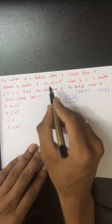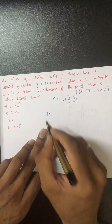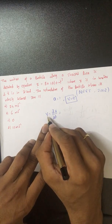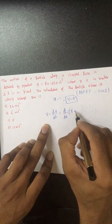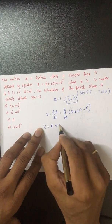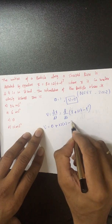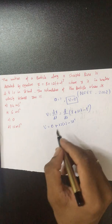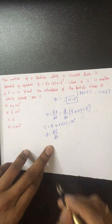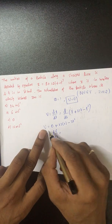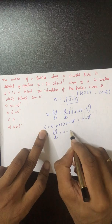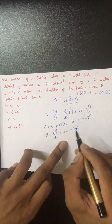Displacement is given, so we find velocity first. Since displacement is a function of time, velocity equals dx/dt — the rate of change of displacement. Differentiating x: d/dt of (8 plus 12t minus t cubed) gives velocity equals 12 minus 3t squared. Then acceleration equals dv/dt, differentiating 12 minus 3t squared gives acceleration equals minus 6t.